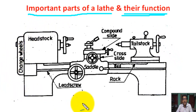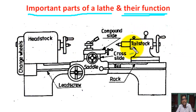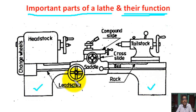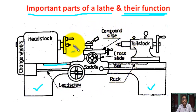We draw this figure only for exam purposes. Here, this is the headstock and this is the live center. This is the tailstock and this is the dead center. Here, this is the change wheel or change gear. This is the leg of the lathe and this is the bed.